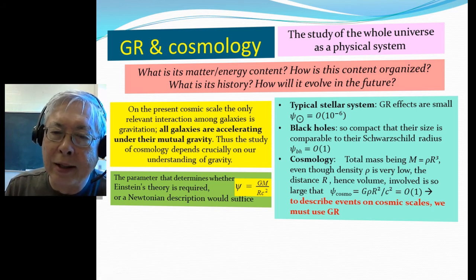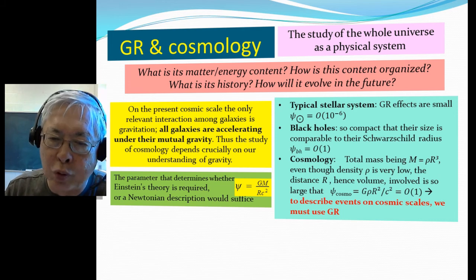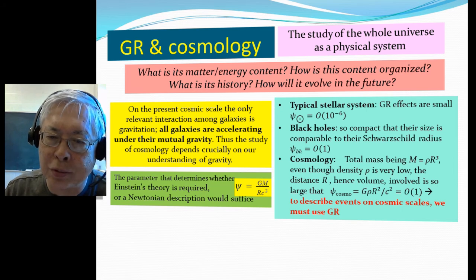And on the other hand, for black holes, the distance scale is so small comparable to the Schwarzschild radius. So the black hole, the parameters can be order one. So therefore, you absolutely need GR to describe black holes.